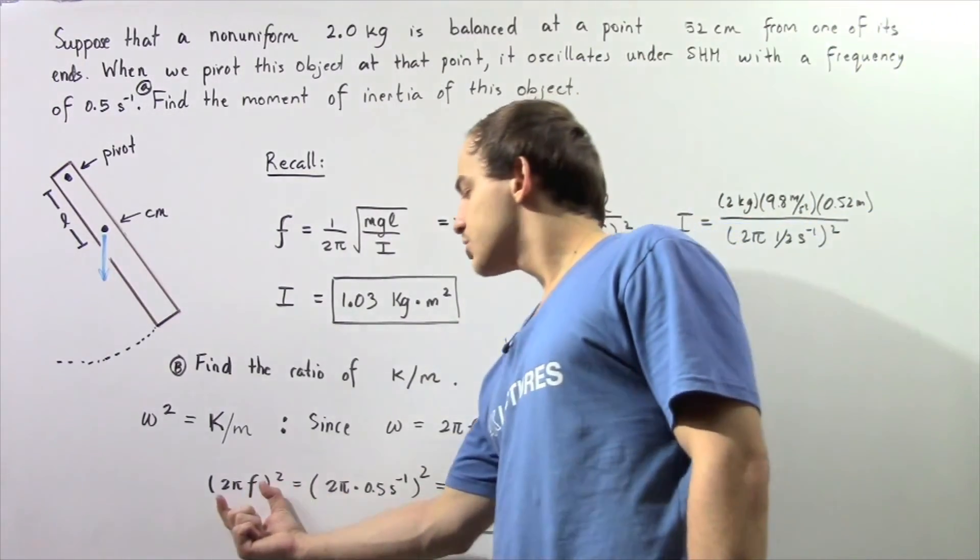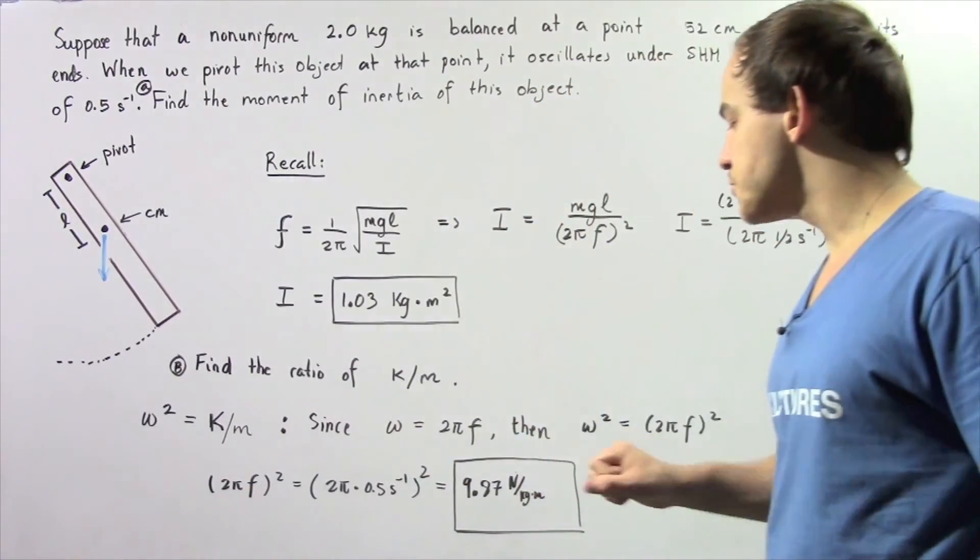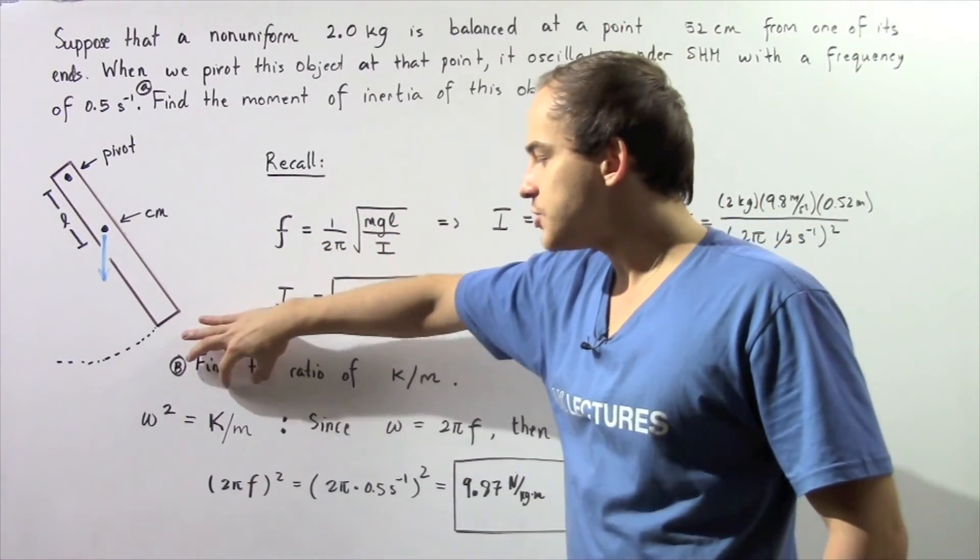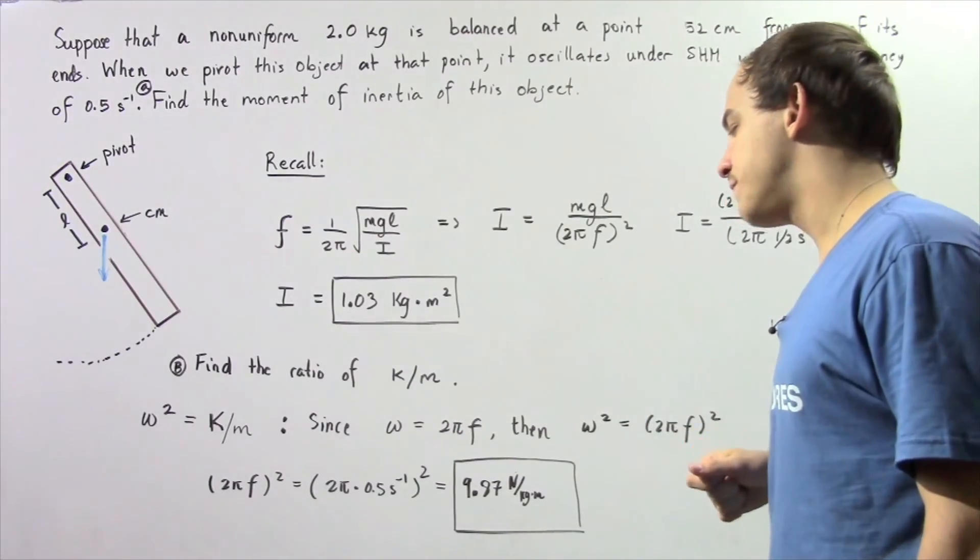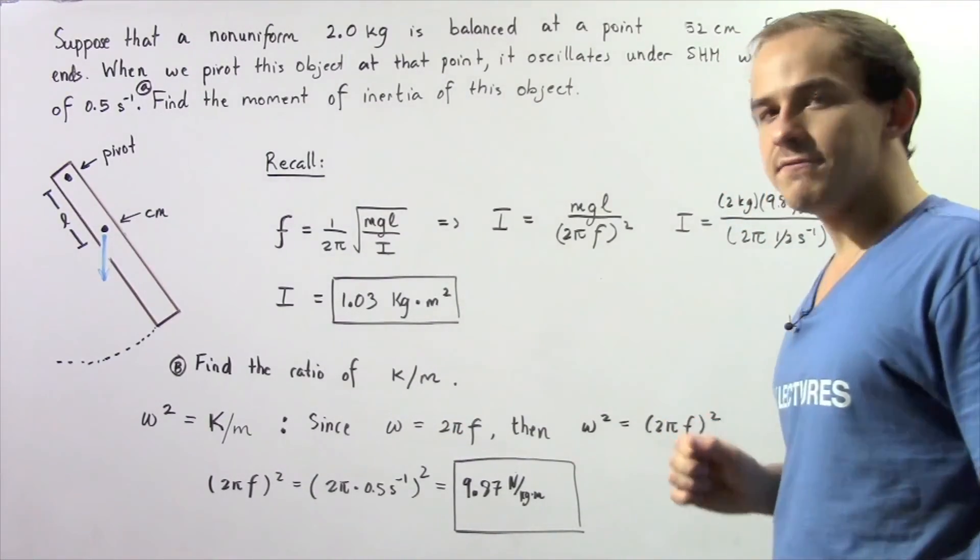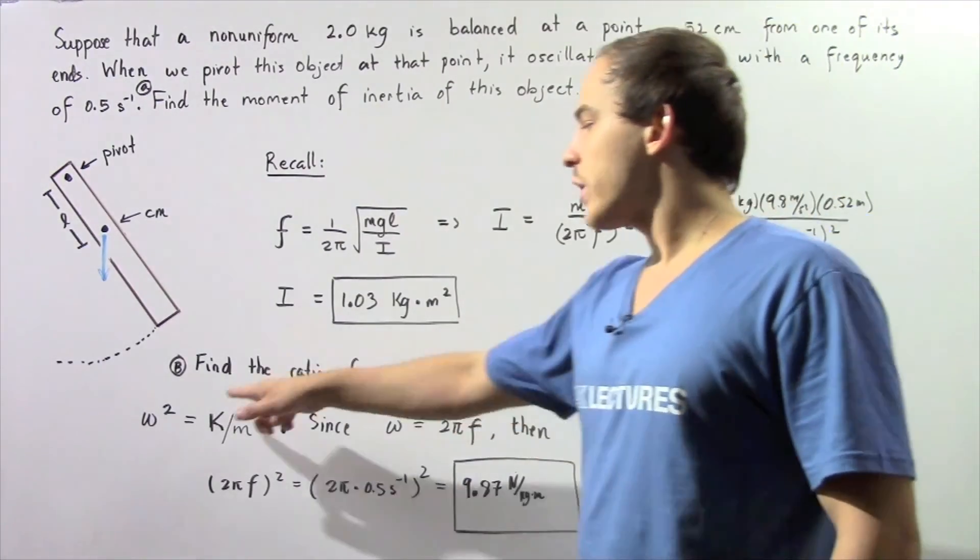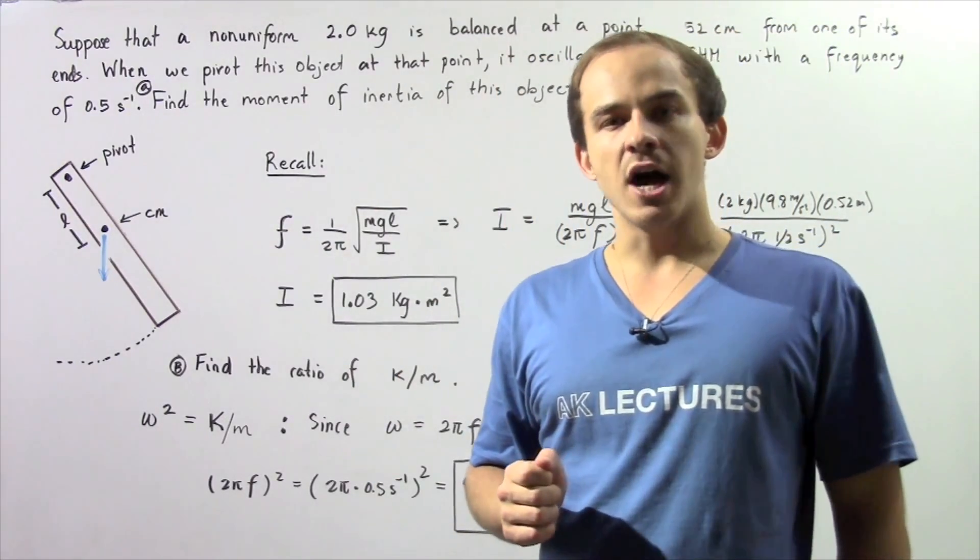If we square 2π times the frequency, that will give us our ω squared, which gives us the ratio of k to m. So 2π times 0.5 squared gives us 9.87 newtons per kilogram·meter as our ratio of the spring stiffness constant to our mass of that object.